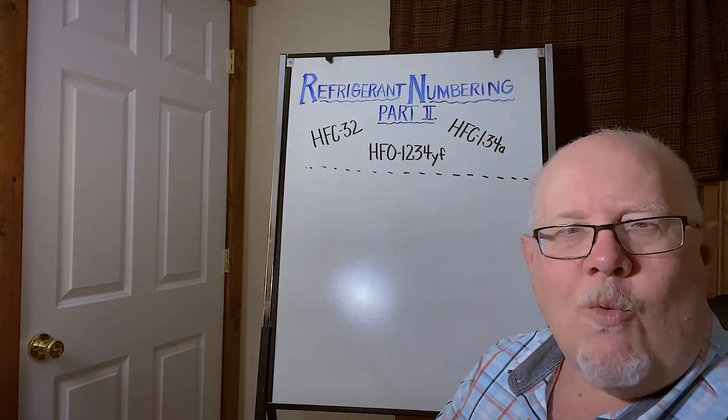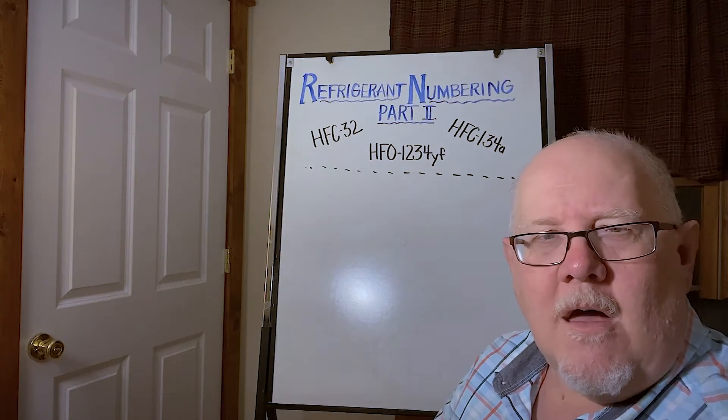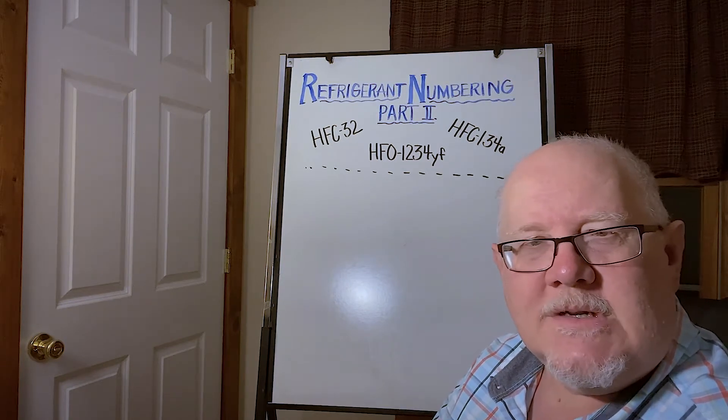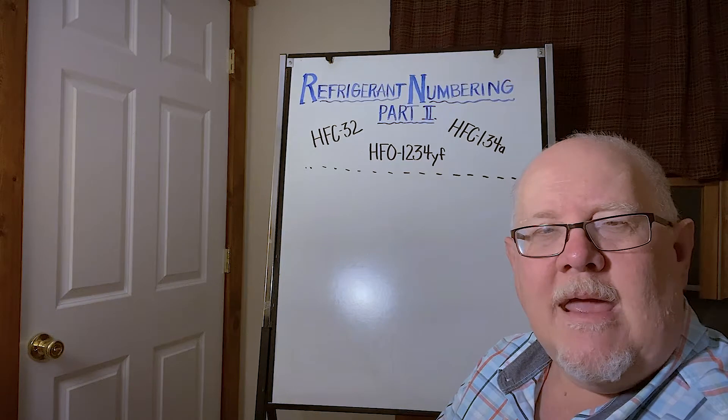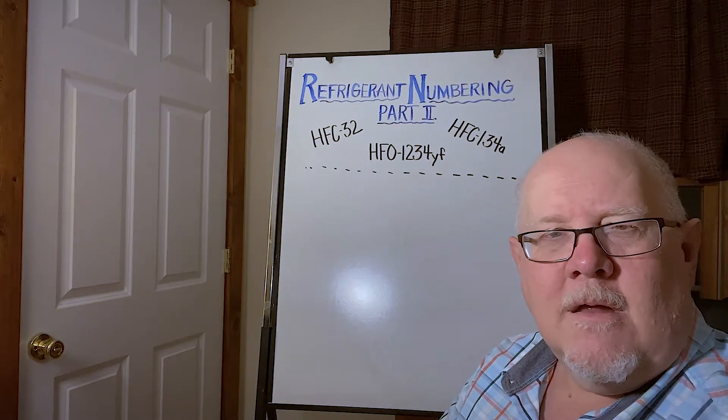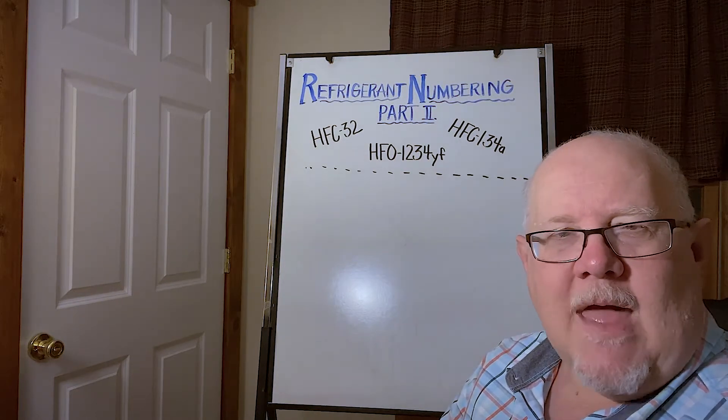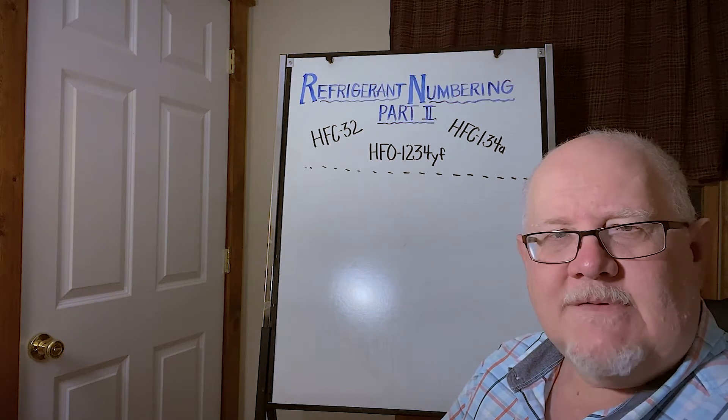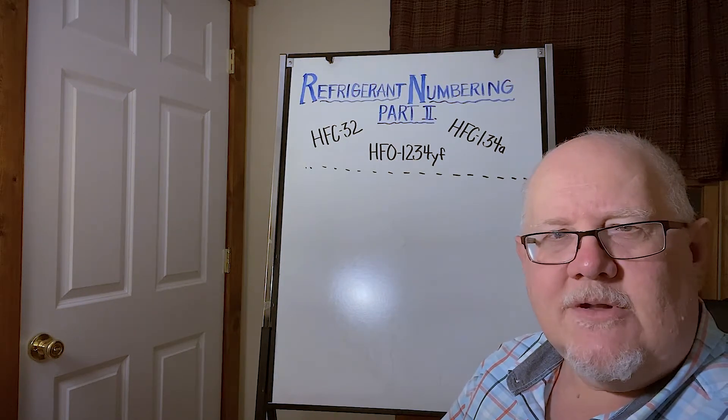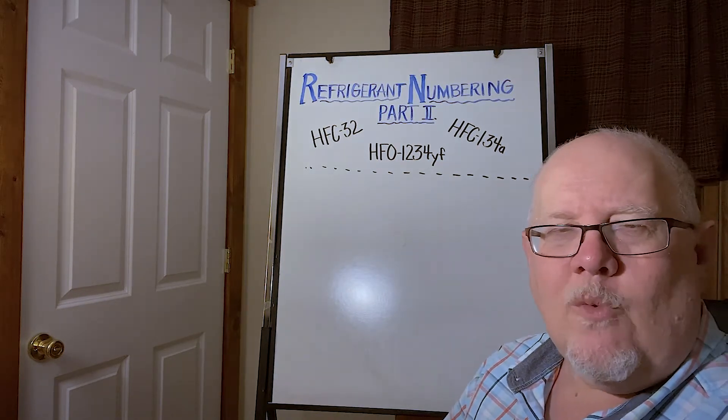Today I want to talk about once we have the basic compounds or the basic molecules to use as building blocks, how we name and number and develop refrigerants after that. So we work with things like HFC-134A, HFC-32, HFO-1234YF.